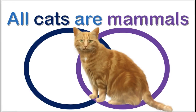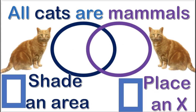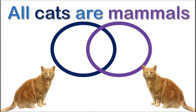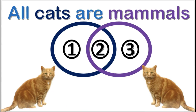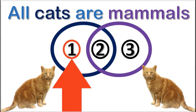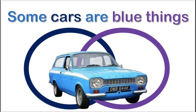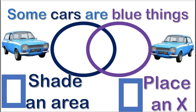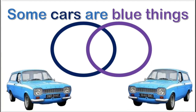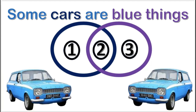Next practice problem: what must you do to diagram this proposition? You must shade an area. Which area must be shaded? Area one — this moves all the cats into the mammal's circle. Next practice problem: what must you do to diagram this proposition? You must place an X into an area. Where does the X go? Area two — the overlap area. Great job on those practice problems.